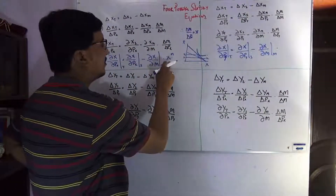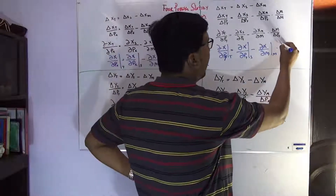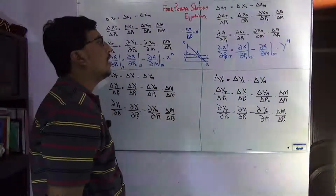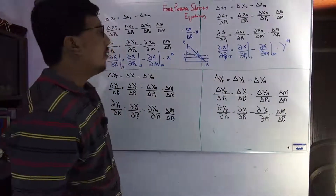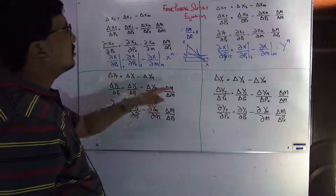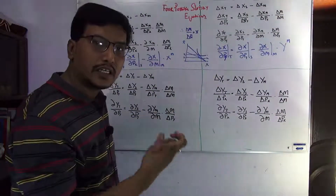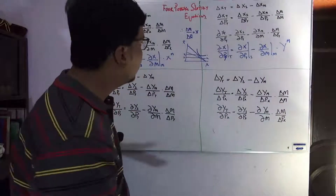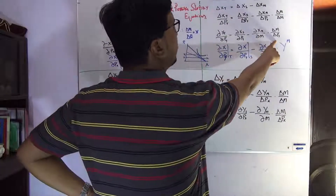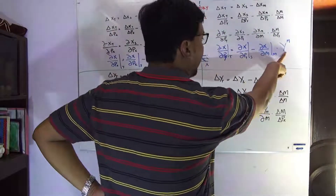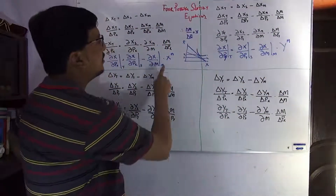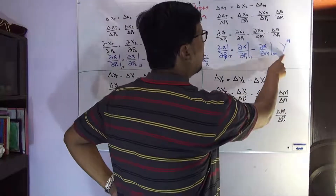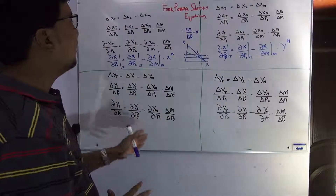In the first equation we used the X Marshallian demand function, but now we have to use the Y Marshallian demand function — this is the key difference in the cross price Slutsky equation. This is because of Shephard's Lemma: taking the derivative of the expenditure function with respect to PX gives the demand function of commodity X, and taking the derivative with respect to PY gives the demand function of Y. So with respect to price PY, the resulting term is the demand function of Y. These are the two equations of the Slutsky — now we have to derive two more.